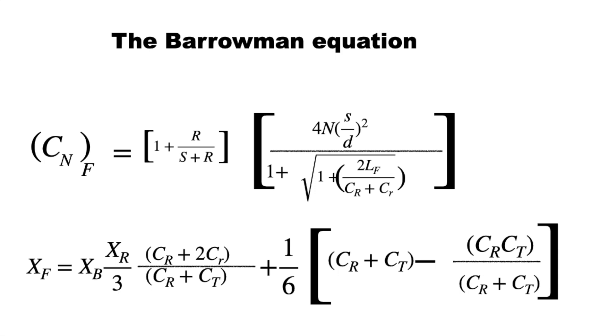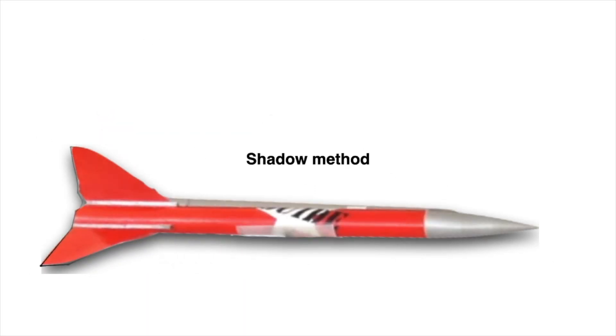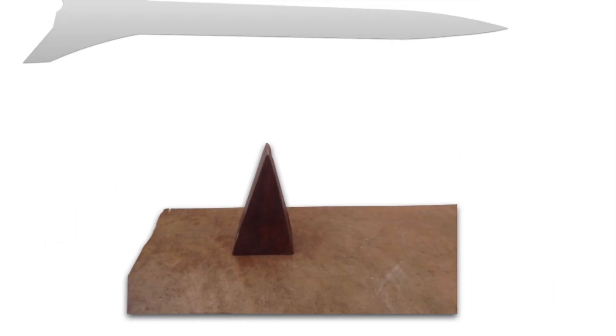If the Barrowman Equation looks somewhat intimidating, there are conservative ways of determining CP. Now you want to place the rocket on a cardboard, draw and cut out its outline as shown here. Now place it on a knife edge wherever it balances, that gives you the center of pressure.